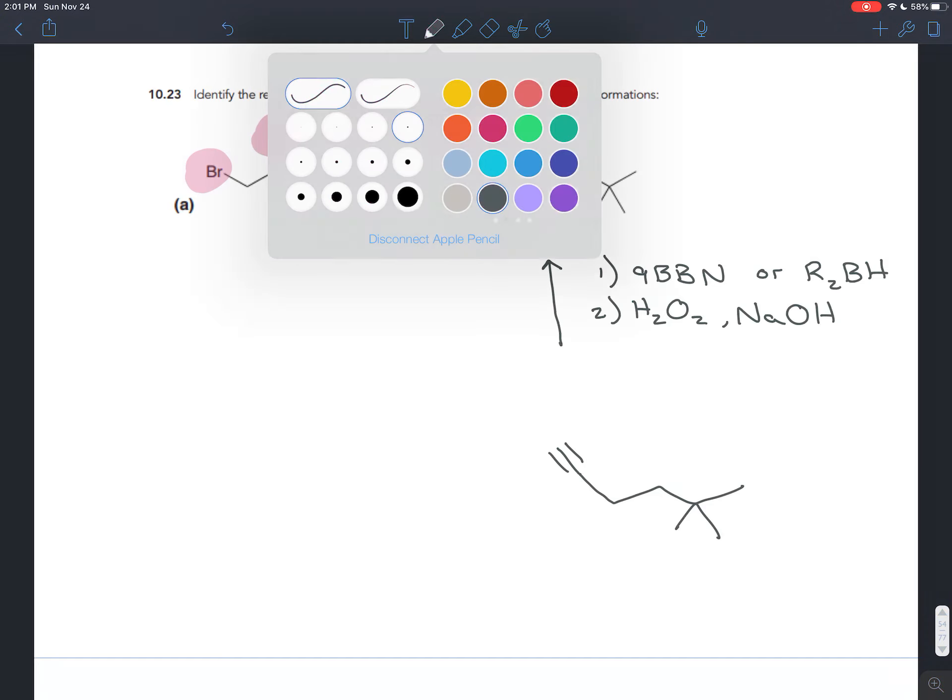How do you do elimination with two leaving groups? It's a two-step process we've seen before. You treat the molecule with excess sodium amide, then follow it up with a water wash. To predict what that molecule is, you just draw the same carbon chain with two pi bonds between the two leaving groups.